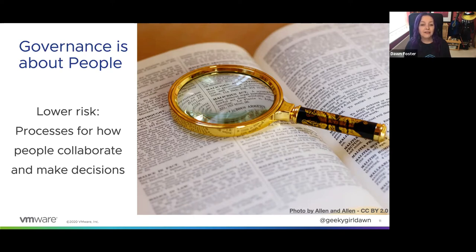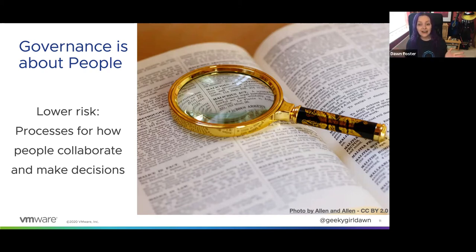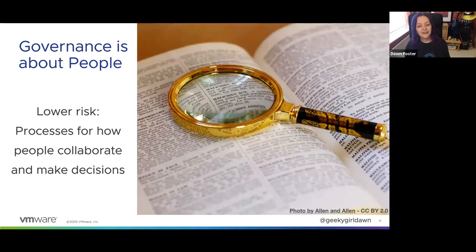The overall cloud native ecosystem is complex with many projects containing overlapping functionality. A charter, especially a scope statement, can help end users understand how a project fits into the overall ecosystem and what functionality it does and does not offer compared to alternatives. One way to mitigate governance risk is to have discussions within the community to gauge interest in getting help with governance. In many communities there can be various types of informal governance that just isn't documented, and quite a few people tend to avoid working on governance, so volunteering to help is a great way to learn more about how the community operates.